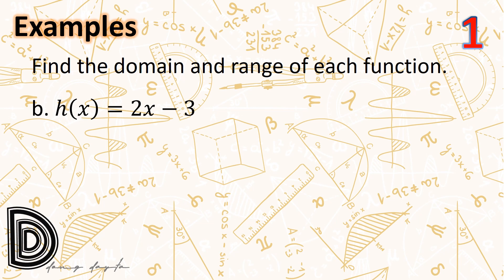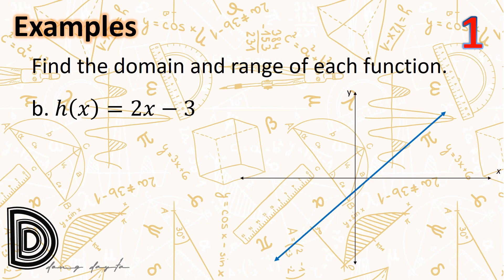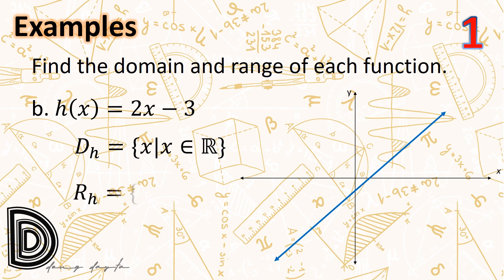Next, we have h(x) = 2x - 3, a linear function whose graph is shown at the right. The graph extends infinitely in both directions, so the x-coordinates may be any real number. Thus the domain of h equals the set of all x such that x is an element of the real numbers, or simply all real numbers. Similarly, the range of h equals the set of all y such that y is an element of the real numbers.